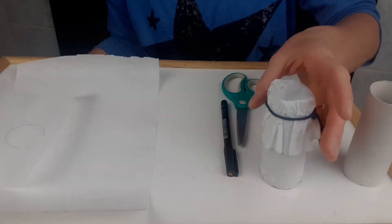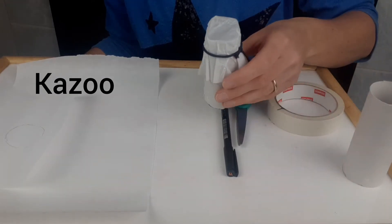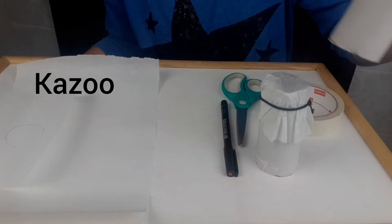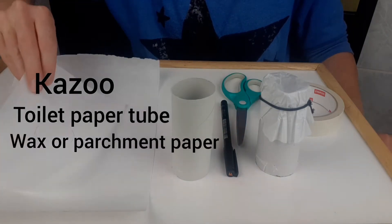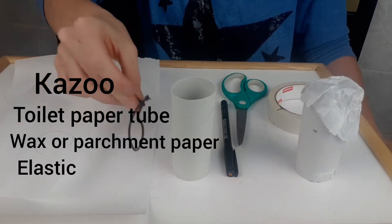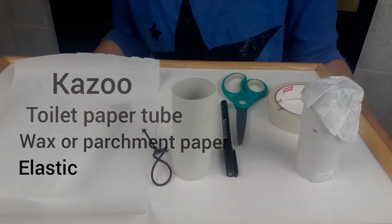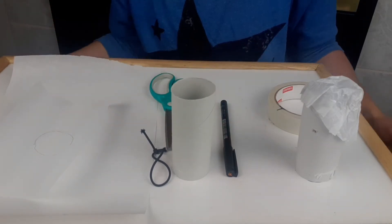Let's start with our homemade kazoo. To make the kazoo, I have three materials: a toilet paper tube, a piece of wax or parchment paper, and an elastic. For materials, I need scissors, so you'll want to get a grown-up to help you.